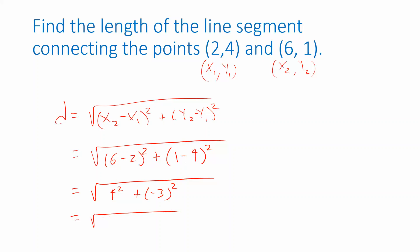4 squared is 16, negative 3 times negative 3 is positive 9, 16 plus 9 is 25, and the square root of 25 is 5.